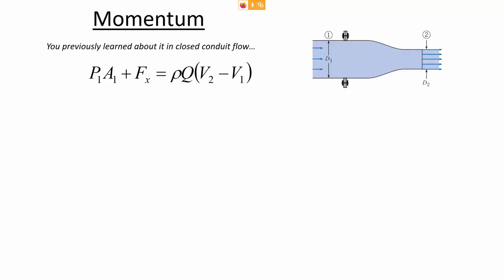The hydraulic jump depth can be predicted with the momentum depth function. You probably have in the back of your mind some memory of when we used the momentum function in closed conduit flow last semester in fluid mechanics. Here's just one of the flow cases we looked at with a nozzle — there were also vanes and junctions. In the case of the nozzle, the sum of the forces required to hold the system steady plus any external forces equals the momentum flow out minus the momentum flow in.